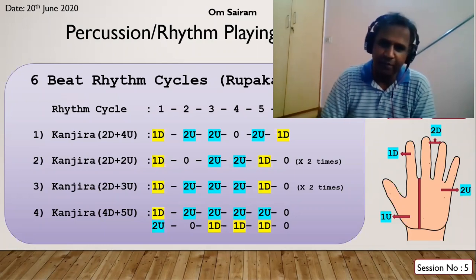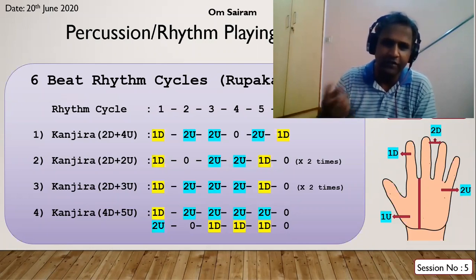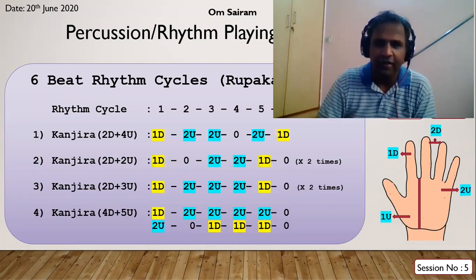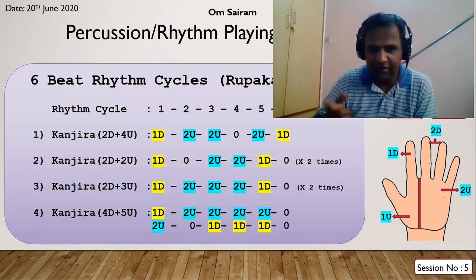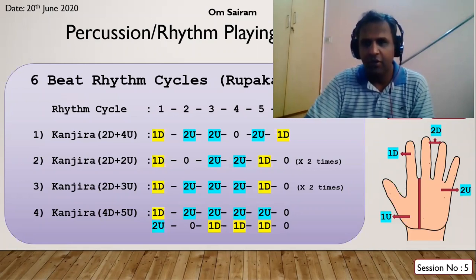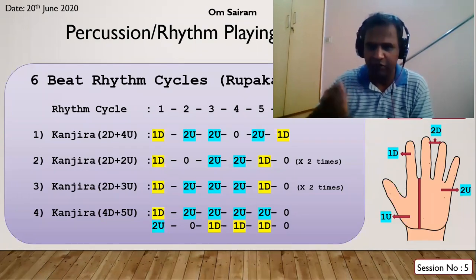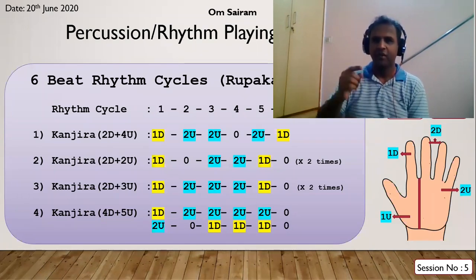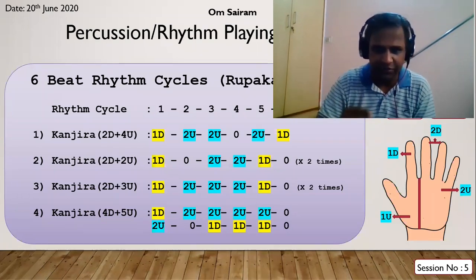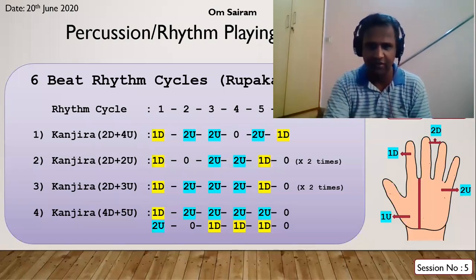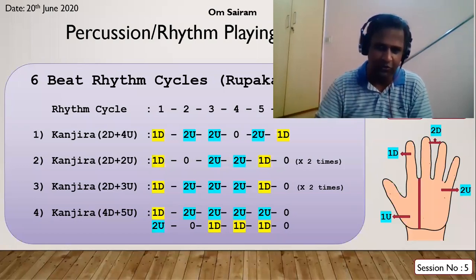In bhajans, the most common beat cycles are eight beats, four beats, or sixteen beats - all multiples of four. The next most common is six beat. A six beat is counted similarly: one two three four five six, one two three four five six. It takes a division of three-three, so one two three four five six, always starting on one.